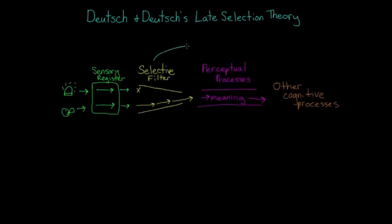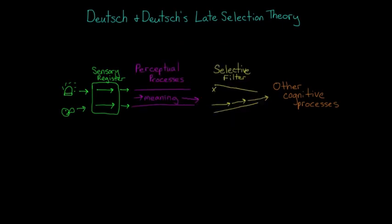A couple folks named Deutsch and Deutsch proposed a late selection theory, which moved Broadbent's selective filter to after the perceptual processes. This means that you actually do register and assign everything meaning, but then your selective filter decides what to pass on to your conscious awareness.